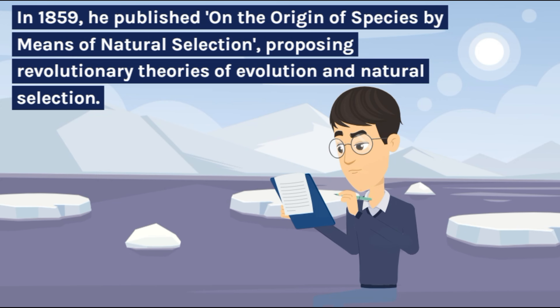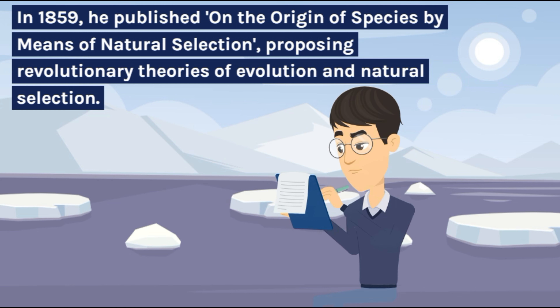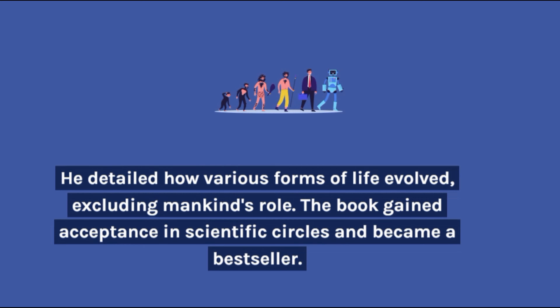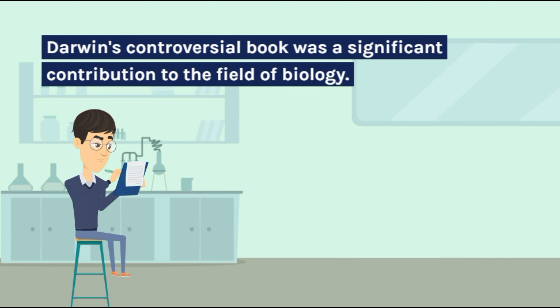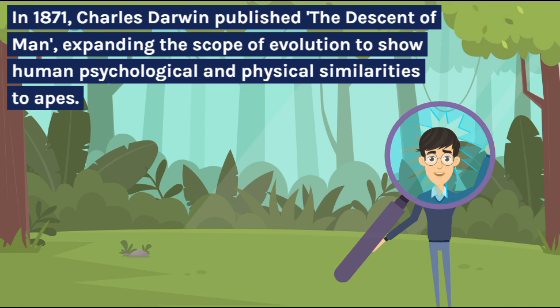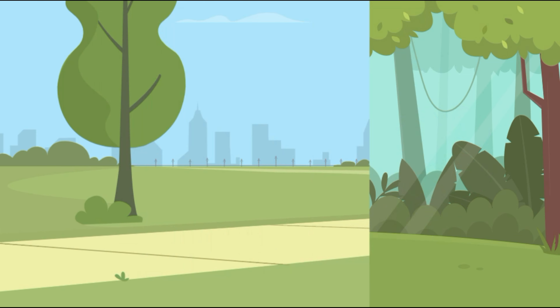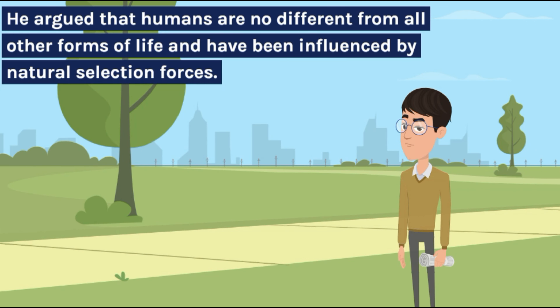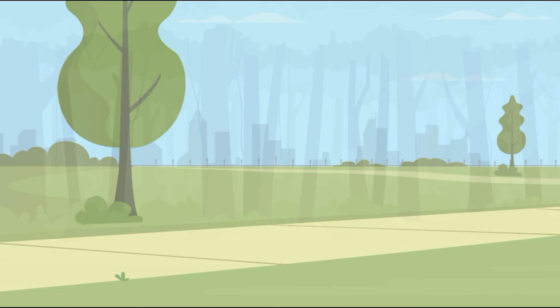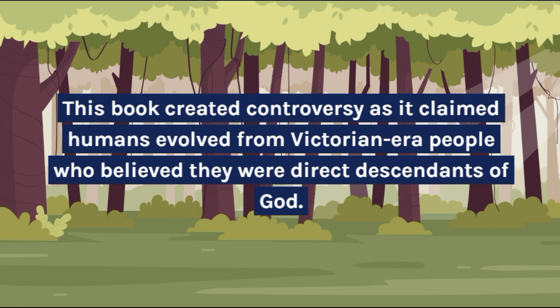In 1859, he published On the Origin of Species by Means of Natural Selection, proposing revolutionary theories of evolution and natural selection. He detailed how various forms of life evolved, excluding mankind's role. The book gained acceptance in scientific circles and became a bestseller. In 1871, Charles Darwin published The Descent of Man, expanding the scope of evolution to show human psychological and physical similarities to apes. He argued that humans are no different from all other forms of life and have been influenced by natural selection forces. This book created controversy, as it claimed humans evolved, challenging Victorian-era people who believed they were direct descendants of God.